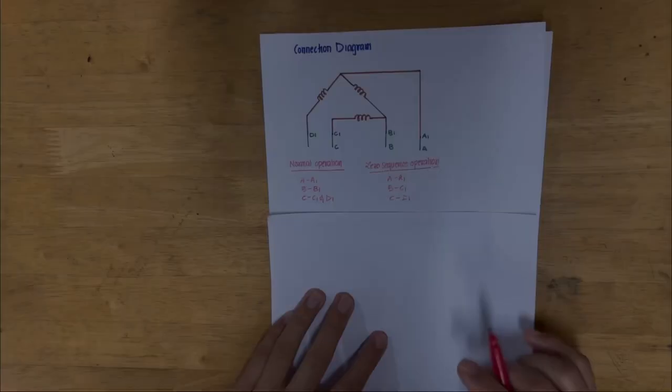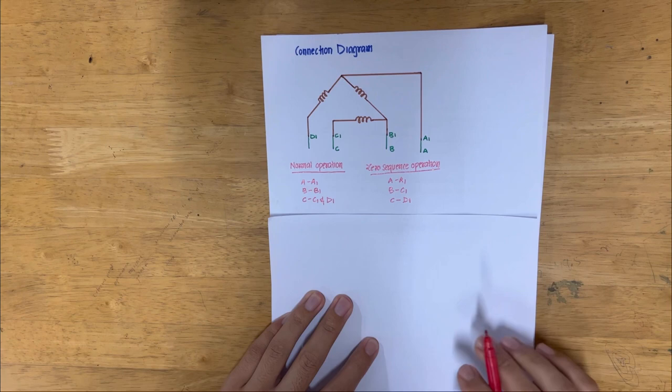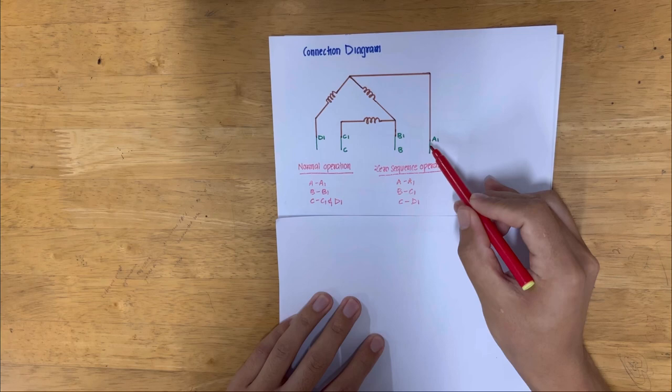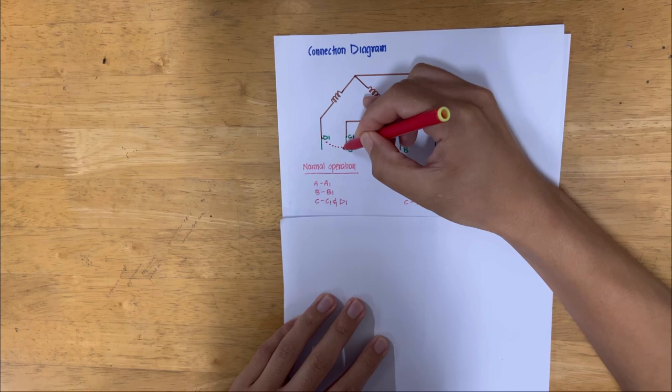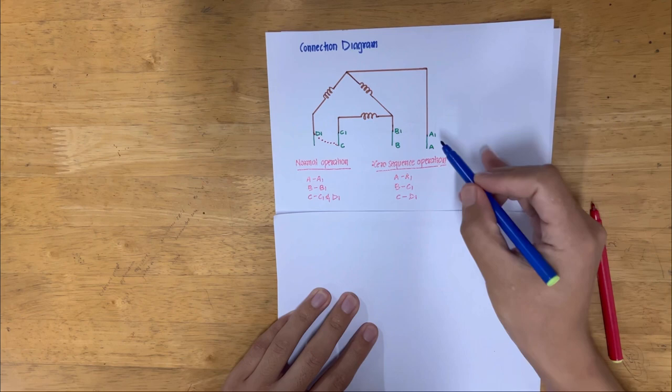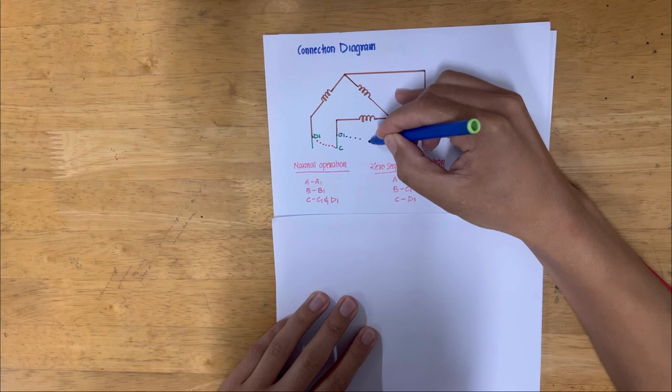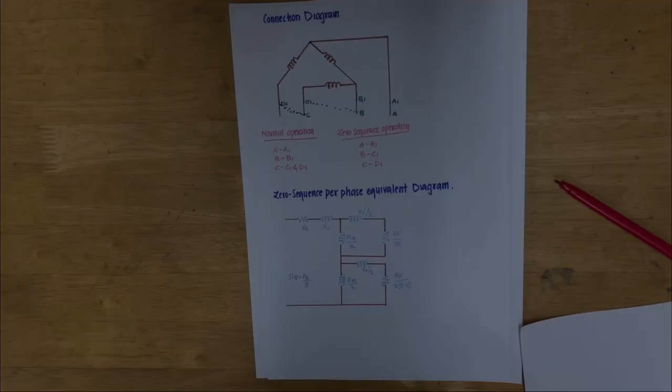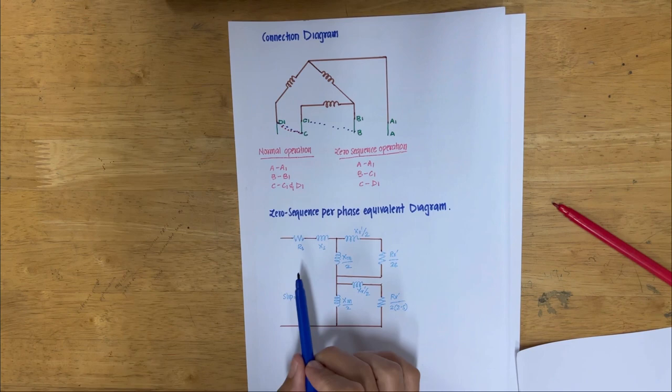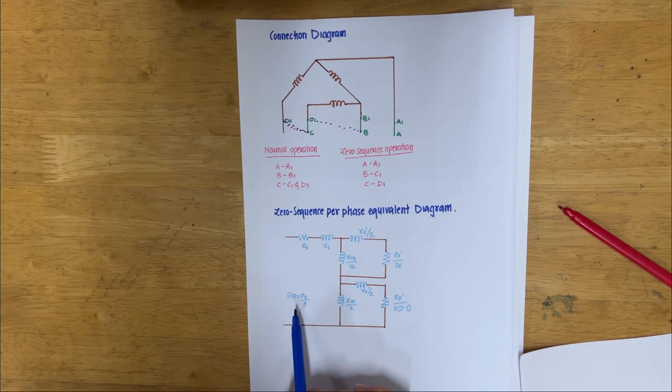This is the connection diagram for zero-sequence braking. Under normal operation, we connect A to A1, B to B1, C to C1 and D1. In zero-sequence operation, we connect A to A1, B to C1, and C to D1. This is the zero-sequence per-phase equivalent circuit diagram, where the stator side has resistance, reactance, and slip given by synchronous speed divided by 3, and the rotor side of the motor is also represented.